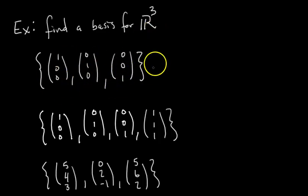The next condition for this set of vectors to be a basis for R3 is that the set has to be linearly independent. You can see that that's true, right? I can't write any of these vectors as a linear combination of the others. So this set of three vectors spans R3, and the set is linearly independent. So we say yes, this set is a basis for R3.